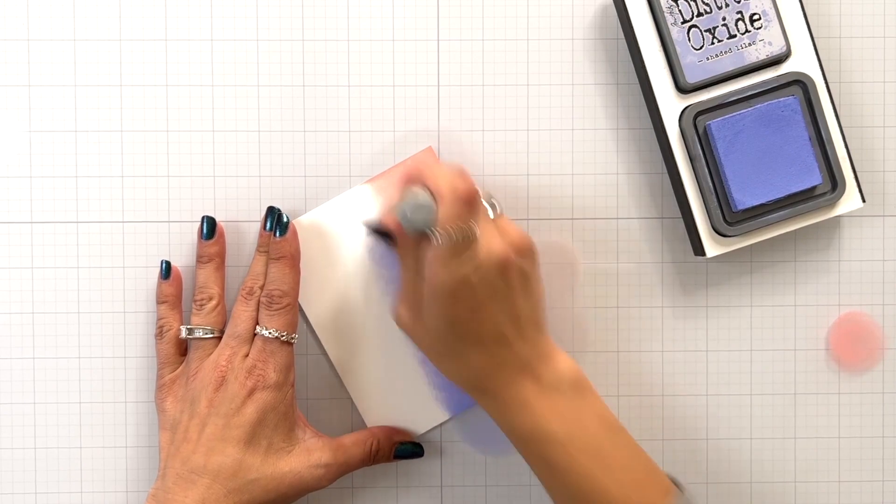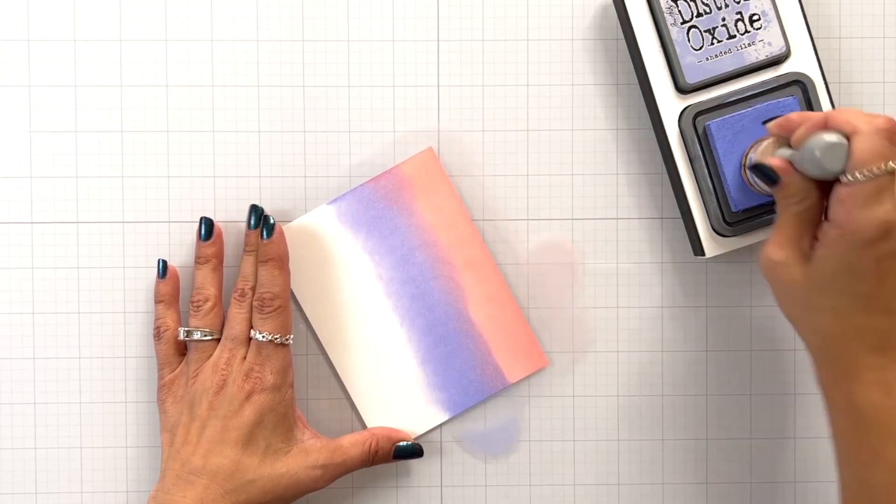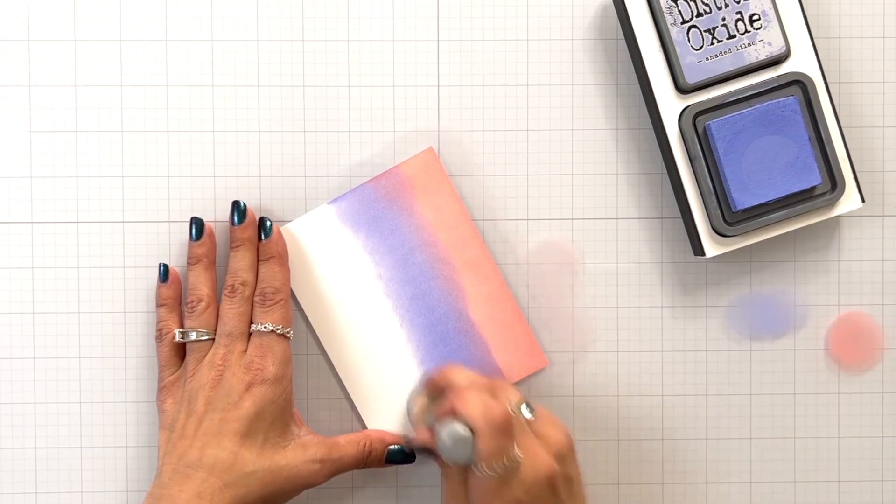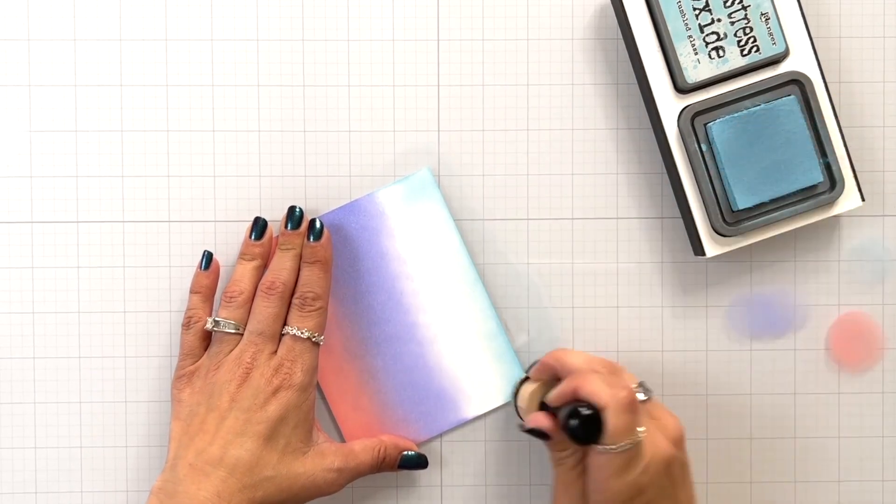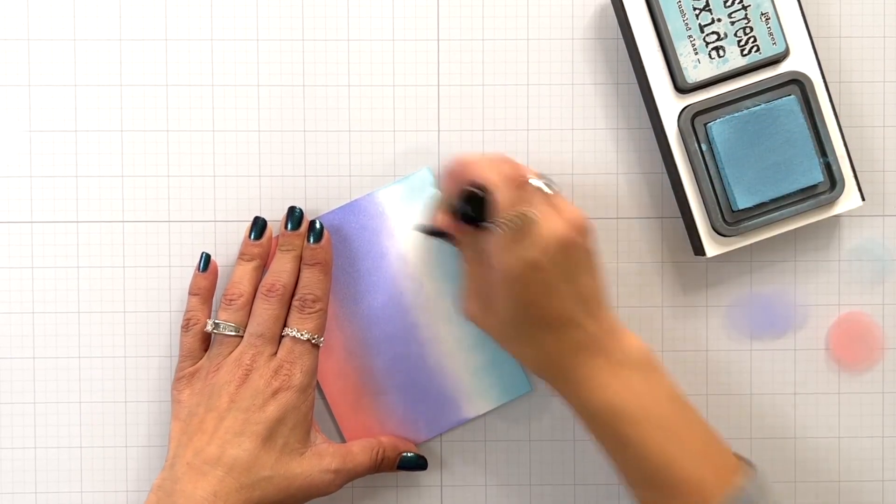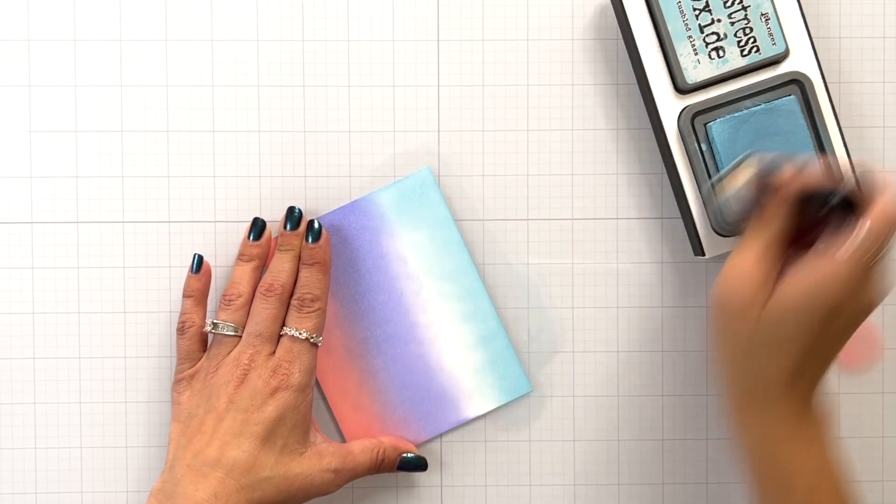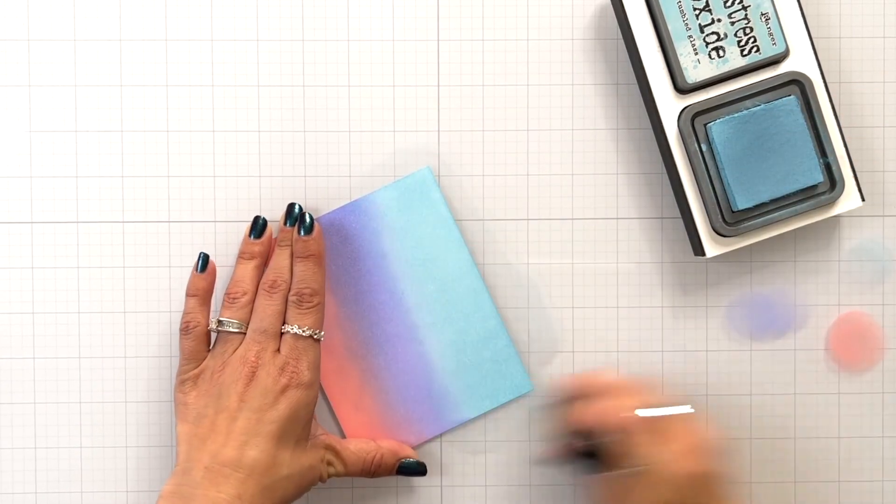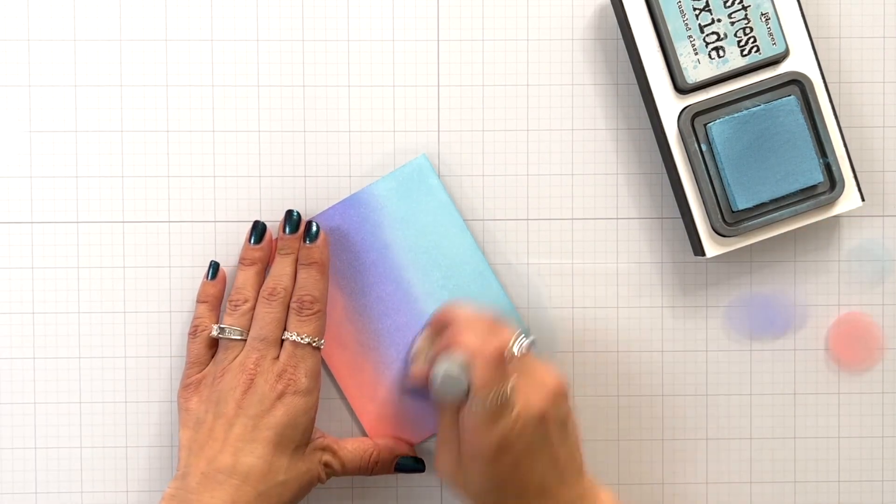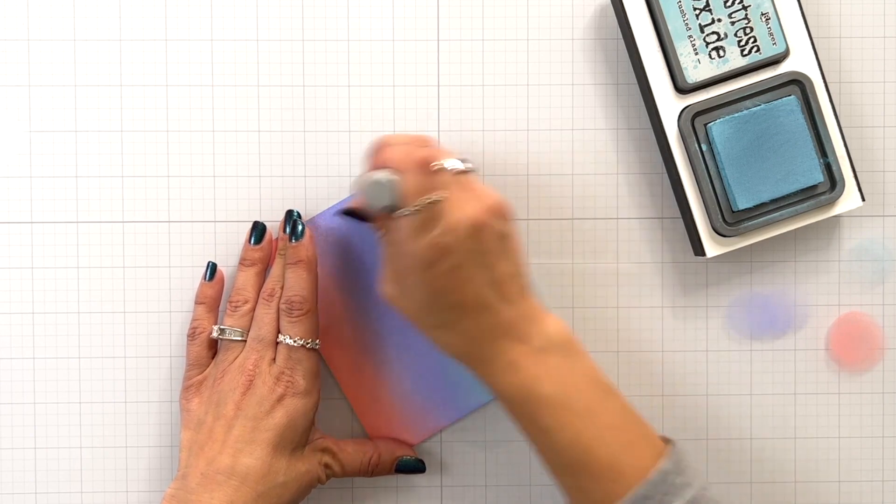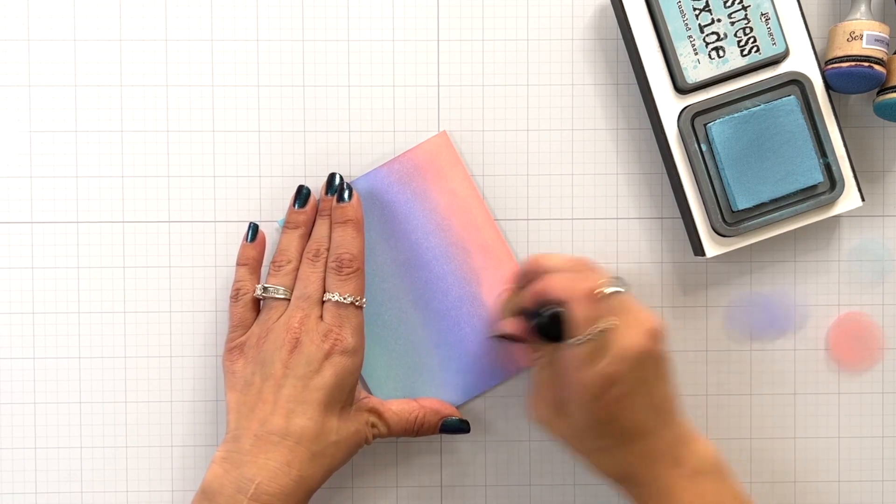I'm going to work on a background using my Distress Oxide inks. This is going to be just kind of a really quick and simple background. I started with Saltwater Taffy, then I came in with Shaded Lilac, and then I'll flip this and come in with Tumbled Glass. Now you can see there are some pretty harsh lines here, but I do go back and forth between the colors quite a bit to help smooth out that transition.